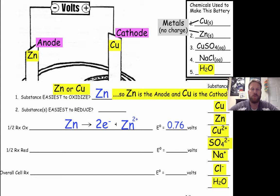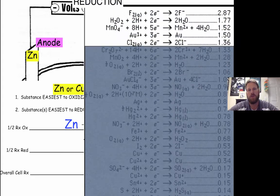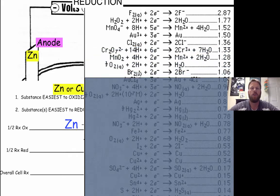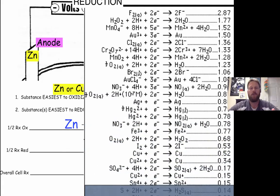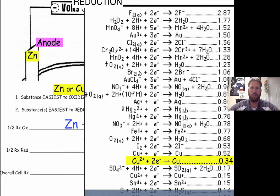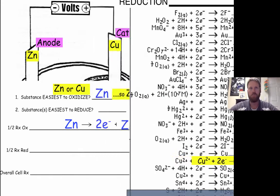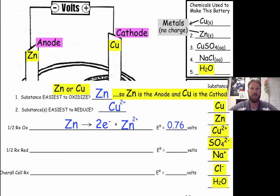Now we can determine the substance that is reduced. It's going to be one of the ions from the aqueous solutions, so that should help you find what's being reduced on the reduction side of the table. We're scanning along looking for one or more of those ions from the aqueous solutions. If we scan far enough, we will find Cu²⁺ higher on the list than everything else. Cu²⁺ ions are reduced — the half reaction is written here with 0.34 volts.